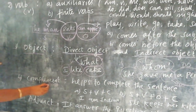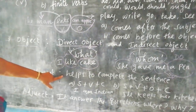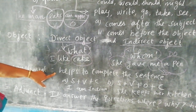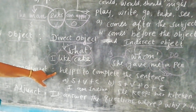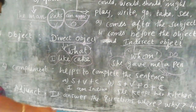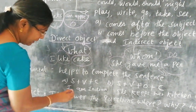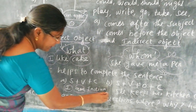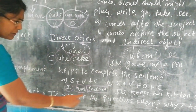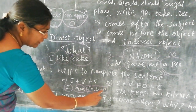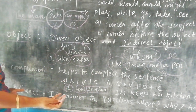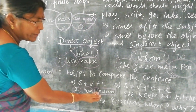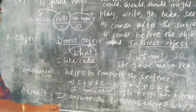Now let us see the complement. The complement helps to complete the sentence. When you remove the complement, the sentence becomes meaningless. For example, 'I am an Indian.' 'I' is the subject, 'am' is the verb, and 'Indian' is the complement. If you remove 'Indian,' you only have 'I am' — the complement helps to complete the sentence.